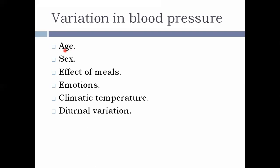The next variation is sex. Females generally have lesser blood pressure than males of the same age group. However, sex has influence on blood pressure in females only before menopause, because of the influence of estrogen — the systolic blood pressure is 4 to 6 mmHg lower than that of males of the same age group. After menopause, females usually have the same or slightly higher blood pressure than males of the same age group.